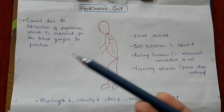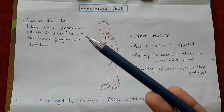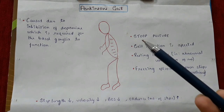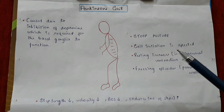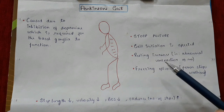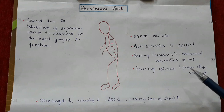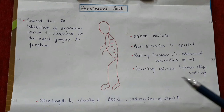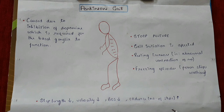Parkinson's gait is caused due to inhibition of dopamine, which is required for the basal ganglia to function. The patient usually has a stooped posture, gait initiation is affected, and resting tremors are present. Freezing episodes are also present — the person stops walking suddenly. Step length decreases, velocity decreases, base of support decreases, and cadence (number of steps) is increased.